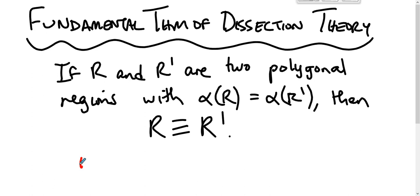As a really quick side note, the 3D analog is false. You can show that using something called the Dane invariant, which is really cool and worth studying.